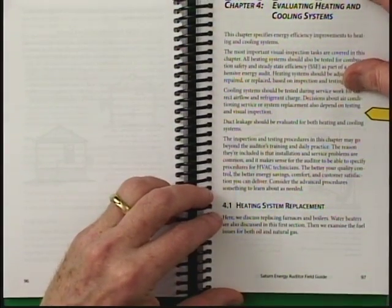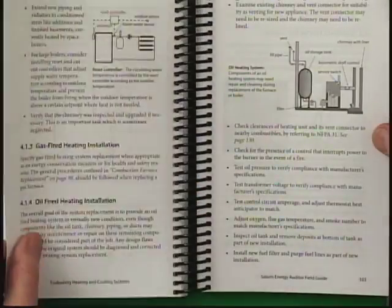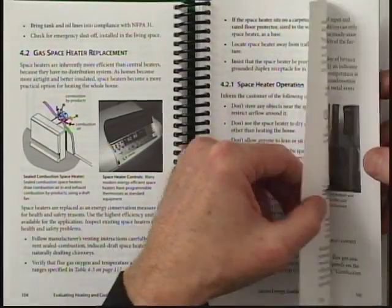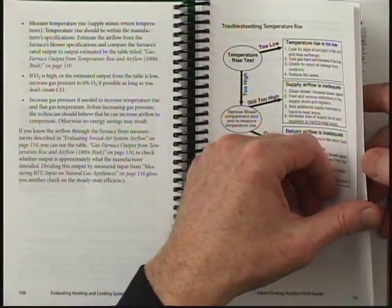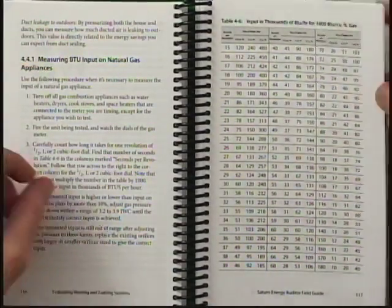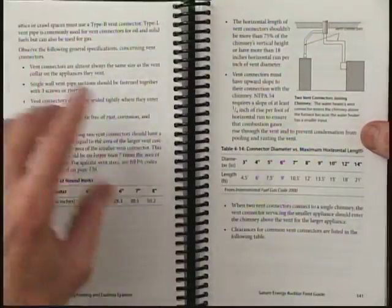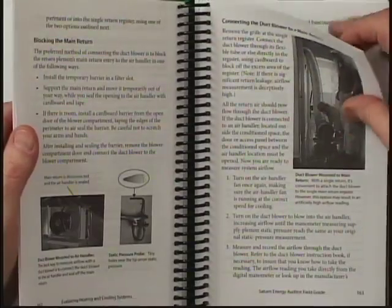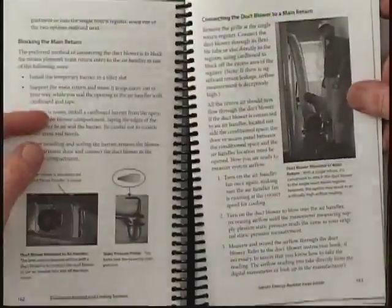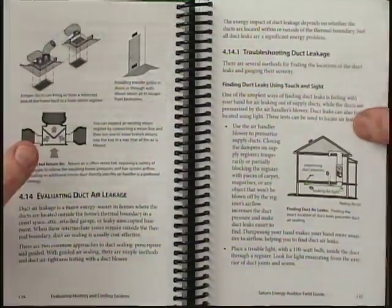Then we've got the long chapter on evaluating heating and cooling systems. This is mainly about working with the professionals, understanding what they do, demanding that they do the proper testing — both for safety and efficiency — and that we really do make the energy savings we're looking for in these heating and cooling systems. There's a whole lot of opportunity to save energy, improve comfort, take care of the client's health and safety, and remove fire hazards. All those things are covered in the heating chapter.